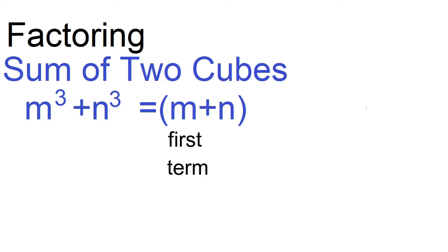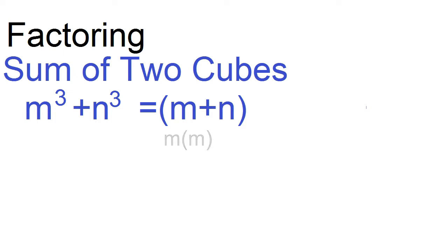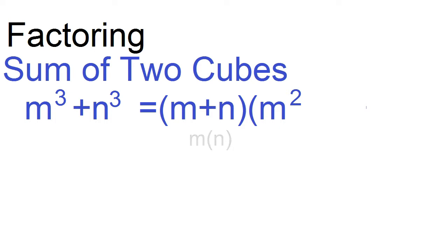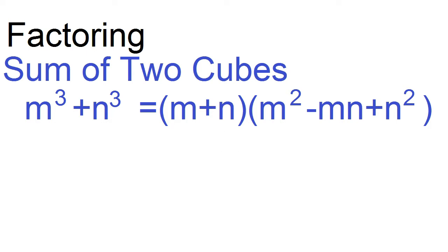Let m be the first term and n be the second term. Use this first factor to find the other factor. Square the first term: m times m is m squared. Multiply the first term and the second term: m times n is mn. Write the opposite: minus mn. Then square the second term: n times n is n squared. The factors are the quantity m plus n and the quantity m squared minus mn plus n squared.